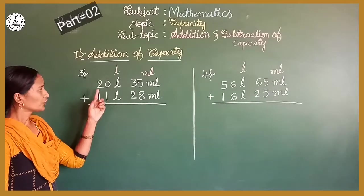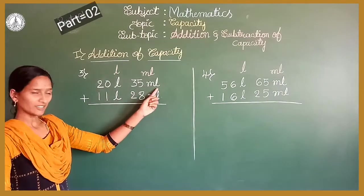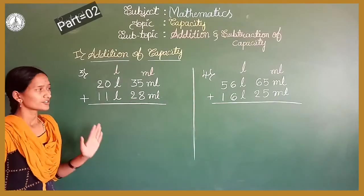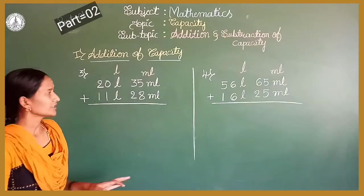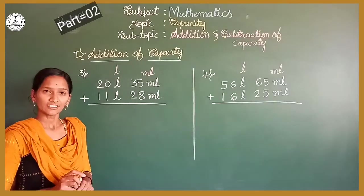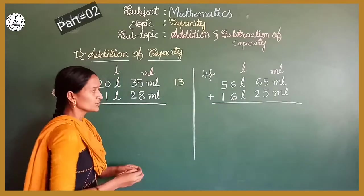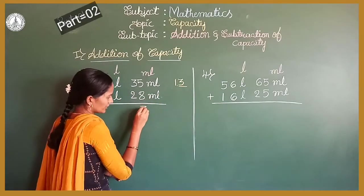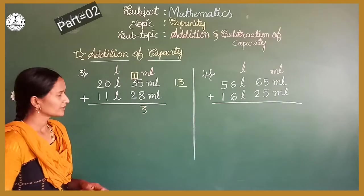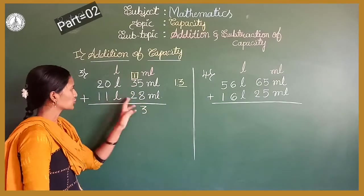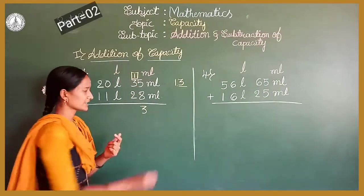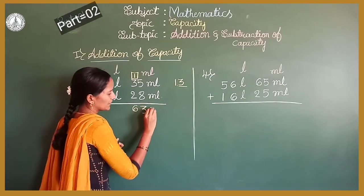This is our third problem: 20 litres 35 millilitres plus 11 litres 28 millilitres. First, add the numbers in millilitres. 5 plus 8 is 13 — it is a 2-digit number. Write the 3 here and carry the 1. Next, 3 plus 2 is 5, plus the carry 1 is 6. So 63 millilitres.